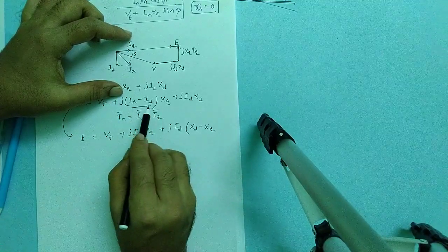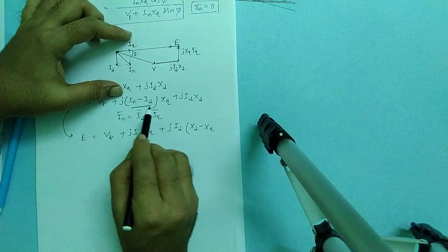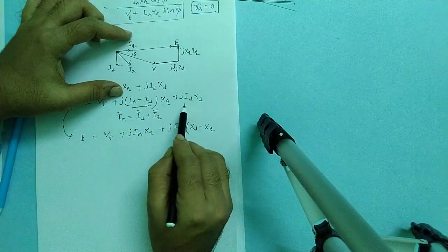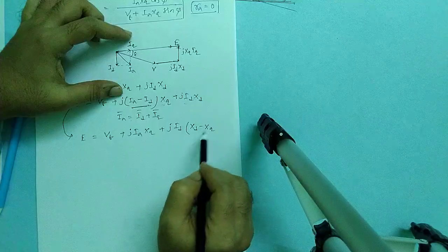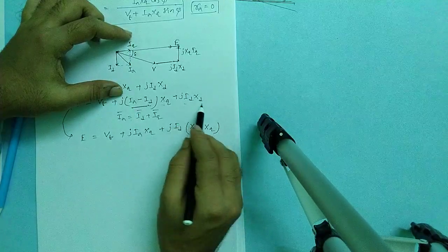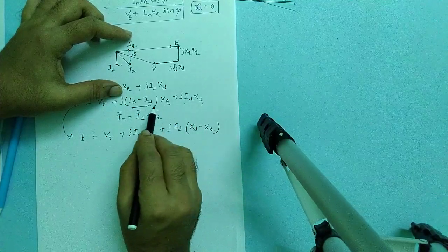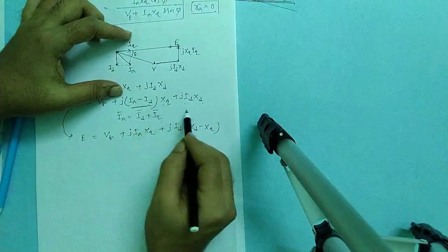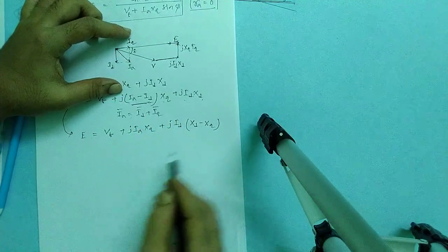Here is i_d, i_d X_q, and here i_d X_d. i_d X_d minus i_d X_q. From this equation, we can draw the phasor diagram like that.